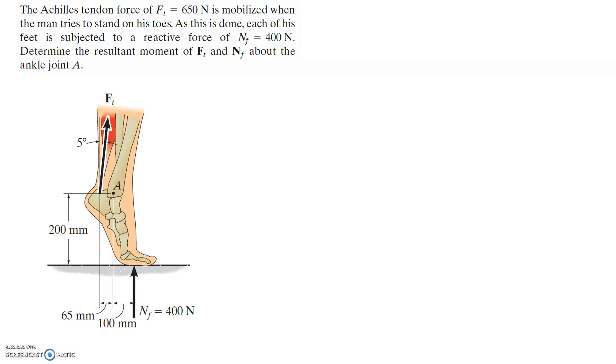Let's start off by labeling our picture. We know this force here we're given is 650 newtons, and we're going to try and figure out the moment caused about point A. We have our equation where the sum of the moments about point A has to be equal to the resultant moment about point A.